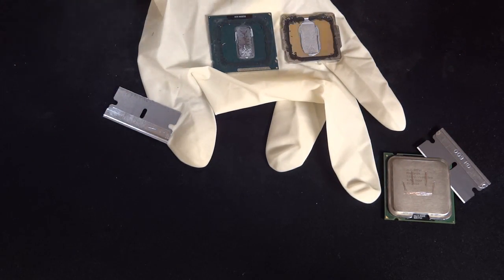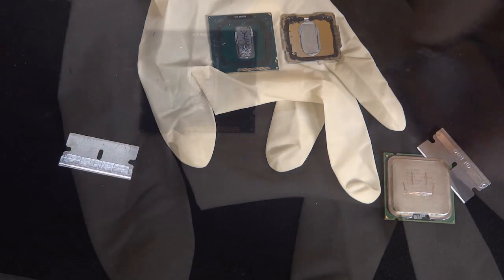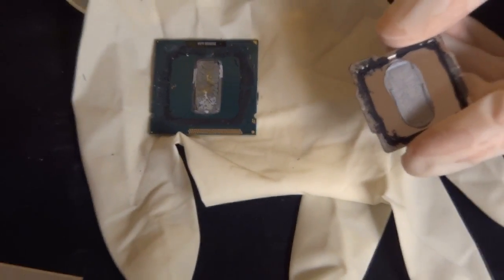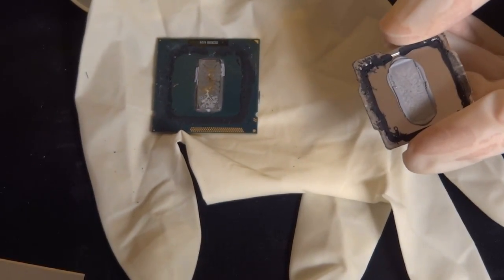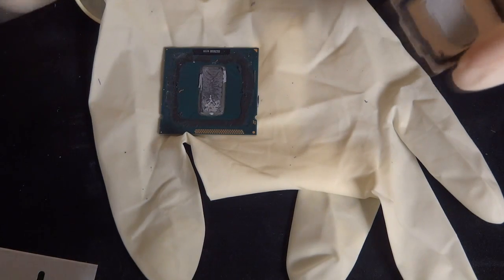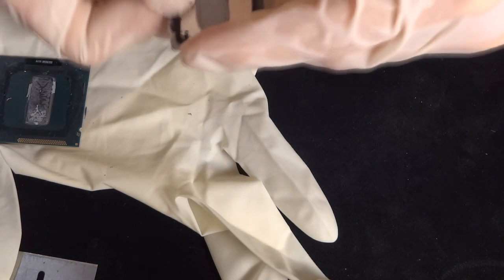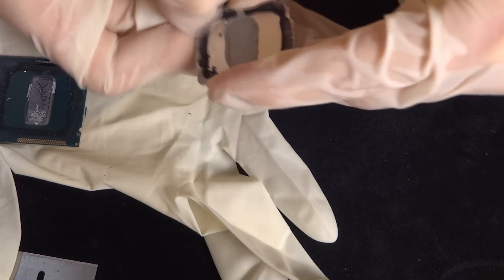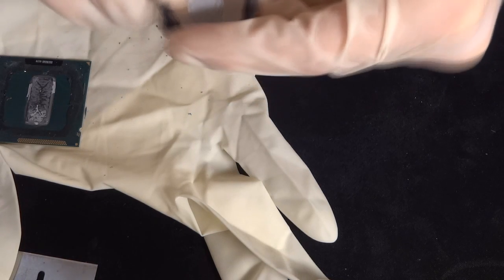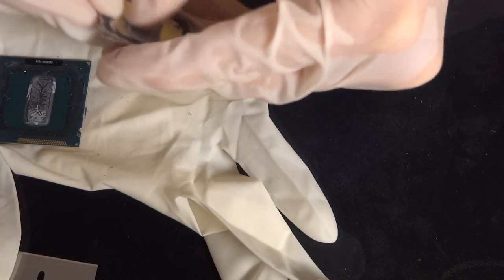Here you can see me getting rid of the IHS. It kind of twists off and you just pull it out. When it comes to applying the CLU, what you want is the thinnest layer possible between the die and the IHS. You might ask why do you not use normal paste—it's because CLU has better properties in terms of a paste and therefore it's much better to use. If you're going to delid, use CLU or CLP for your TIM on the die, in other words on the PCB.